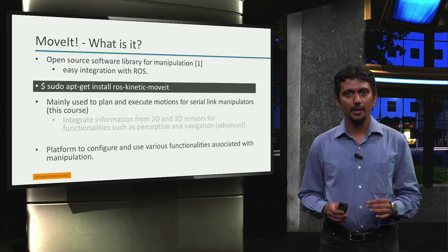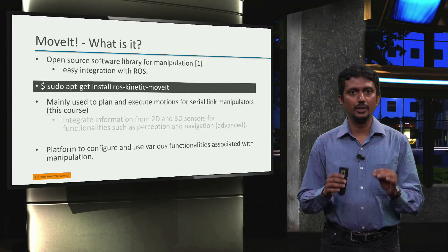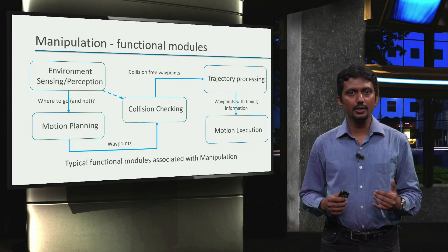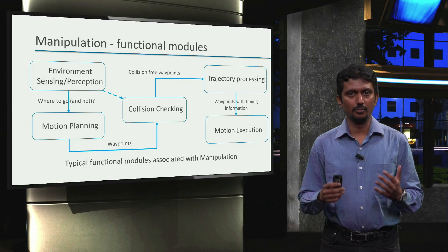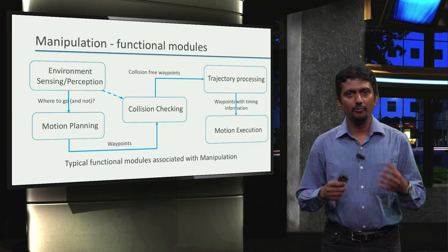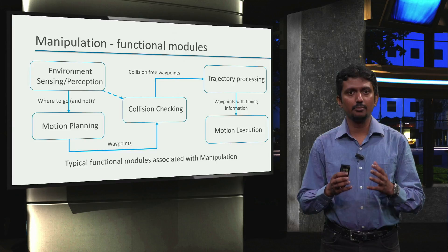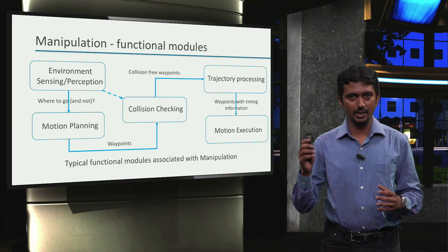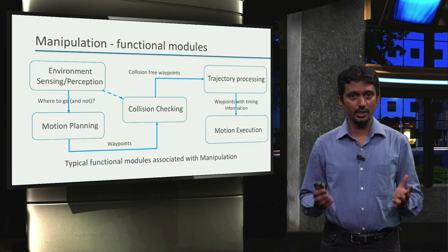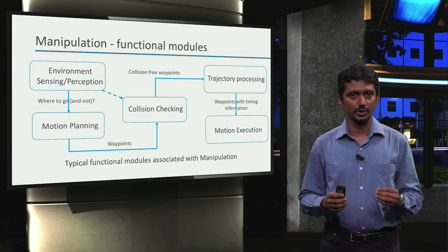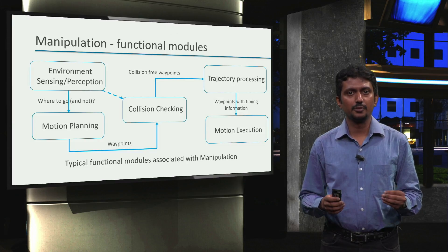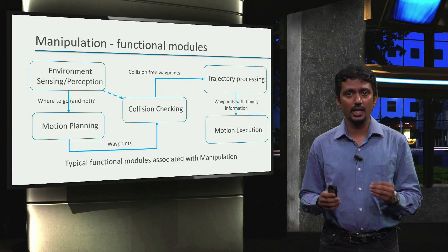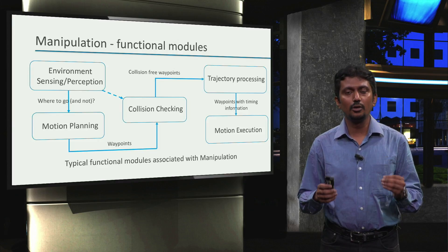In essence, MoveIt is a software platform to configure and use various functionalities associated with manipulation. Let's recall the different functional modules associated with manipulation that we saw in the earlier video. In a broad sense, manipulation can be achieved via successfully combining different functional modules, namely: Environment Sensing, Motion Planning, Collision Checking, Trajectory Processing, and Motion Execution. Thanks to great efforts by different research institutions, faculties, industries, and labs across the world, we have open-source software implementations of all of these modules available.